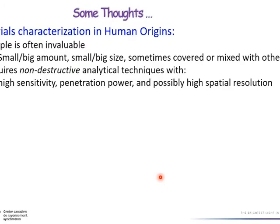The first thing I'm thinking about is: what is unique, in terms of material characterization, in human origins research? The sample in this field is often invaluable. It could be very large, like a dinosaur bone or a human skeleton, or very small, like food residues or dental calculus. Sometimes it's covered under or mixed with other materials. This gives us the requirement that a non-destructive technique would be ideal, with high sensitivity, high penetration power, and high spatial resolution.